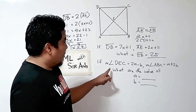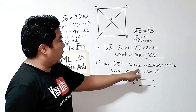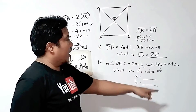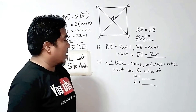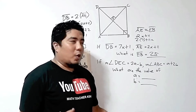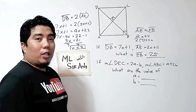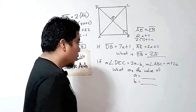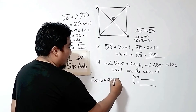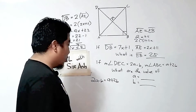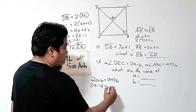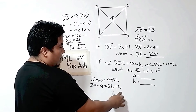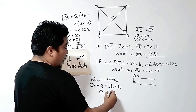Now let us go to our second problem. If the measurement of angle DEC is 2A minus B — which is perpendicular, so 90 degrees — and the measurement of angle ABC is A plus 2B — also a 90-degree angle — since both are equal to 90 degrees, we can equate: 2A minus B equals A plus 2B. Combining like terms and transposing: 2A minus A equals 2B plus B, giving us A equals 3B.